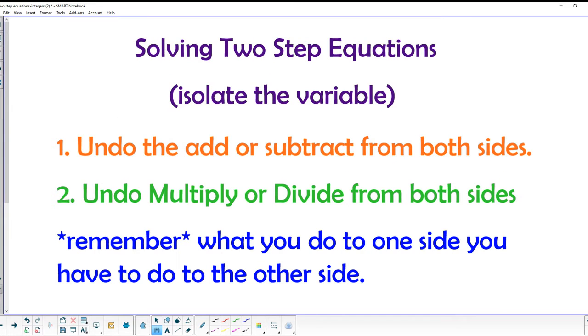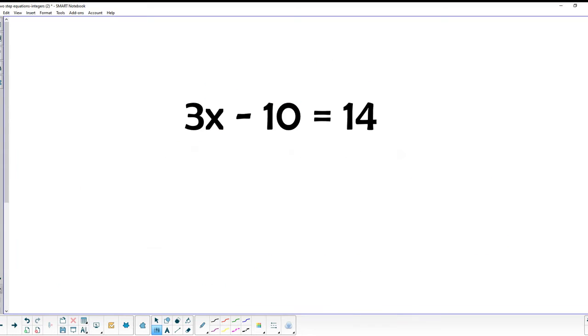Today we're moving on to solving two-step equations. And so the trick is we've got to isolate the variable. The first step is to undo the add or subtract from both sides. Then the second step is to undo the multiply or divide from both sides. So we kind of do the order of operations in reverse order. So let's get into a couple of these problems and see how they work.